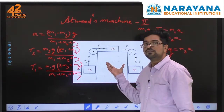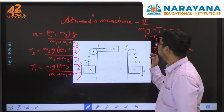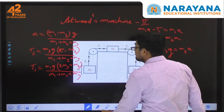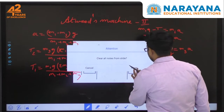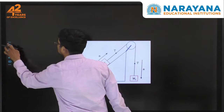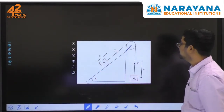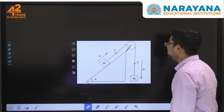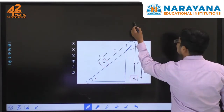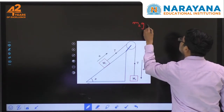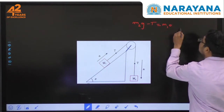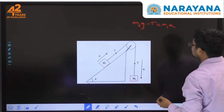So we can find the acceleration and tensions as shown here. Now, suppose you have a different kind of pulley — an inclined plane model. Here, the equation of motion gives: m2·g minus T equals m1·a.